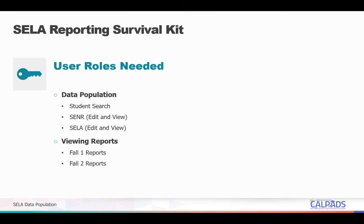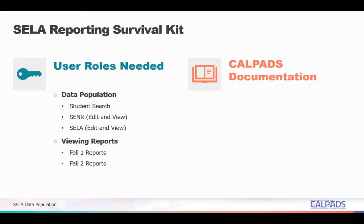Another component for your survival in CALPADS reporting is to know where CALPADS documentation is and what specific documentation you might need to assist you in reporting this data. The CALPADS documentation can either be downloaded from the CALPADS system documentation page at the CDE website or from the reference section of the CALPADS user manual. First is the user manual, which you can access from the help section in CALPADS and it provides you the how-to's in reporting data. Number two is the CALPADS code sets, which provides you a complete list of possible ELAS status codes as well as EL correction codes.